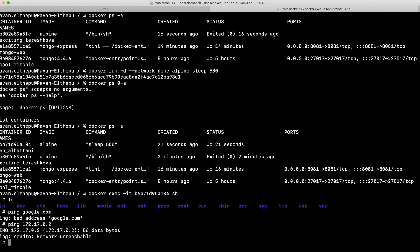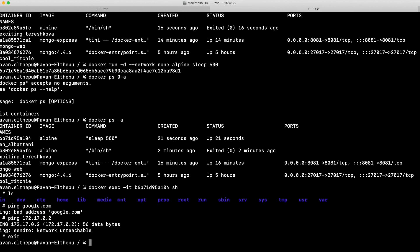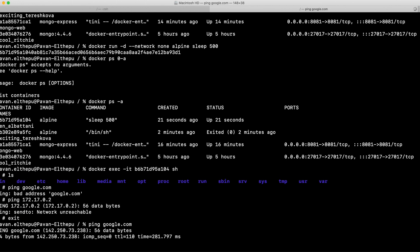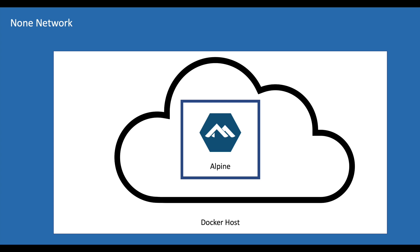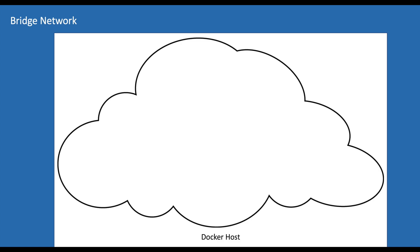To come out of this container, just type exit. Now we are in the Docker host. Now if you ping google.com you get a response, because you are not in the none network — you are on the Docker host. But this network doesn't suit most situations, as we will be consuming different resources like APIs or MongoDB. That's where the bridge network comes into the picture.